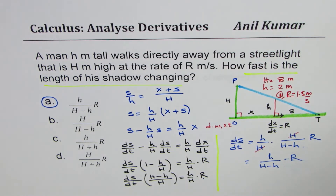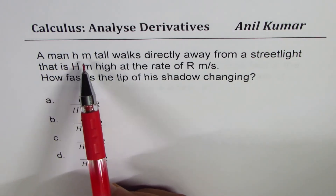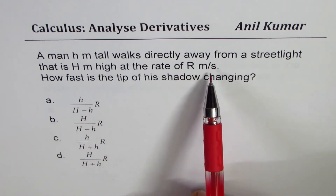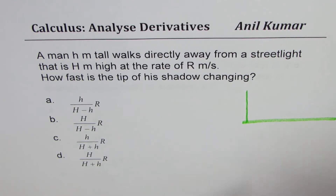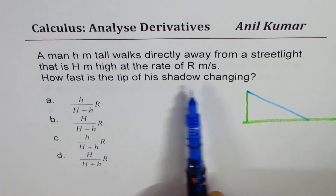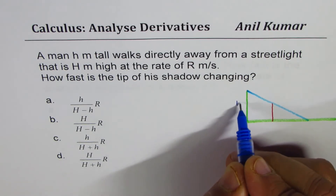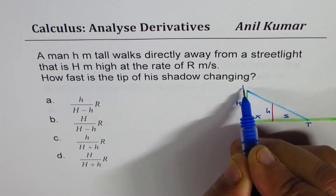Now let's take another version of this and figure out what happens to the tip of the shadow. The next question has the same scenario: a man h meters tall walks directly away from a street light that is capital H meters high at the rate of r meters per second — exactly the same situation. But now the question asks: how fast is the tip of the shadow changing? Let's repeat the diagram: h and H are the heights, x is the person's distance, s is the shadow length, and T is the tip.